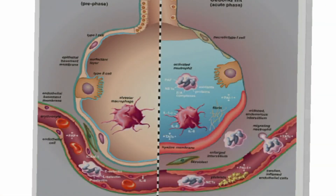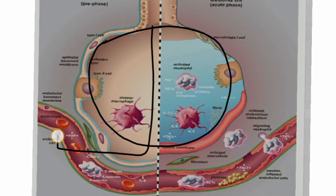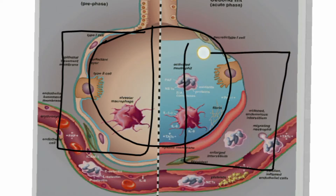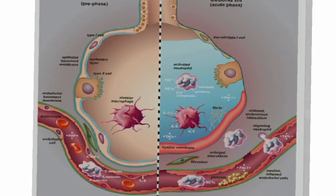So let's discuss the pathogenesis of ARDS. Here we are showing one thing: that is the normal alveoli on one part, and the other part is ARDS. And here, that is the capillary.